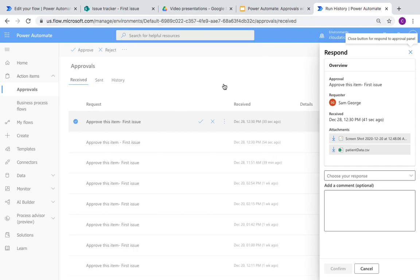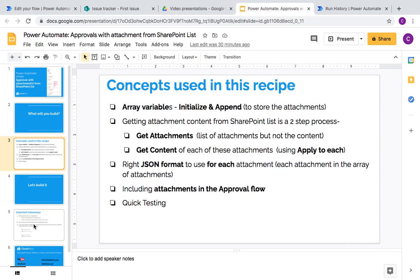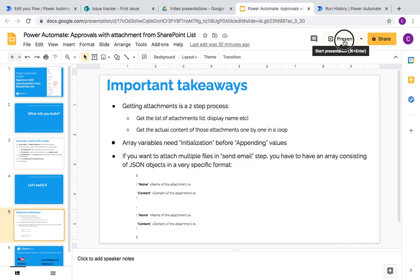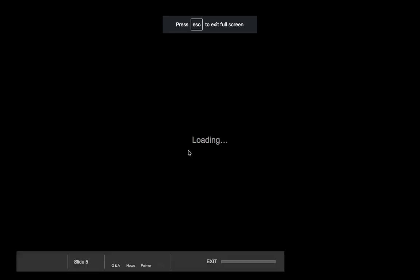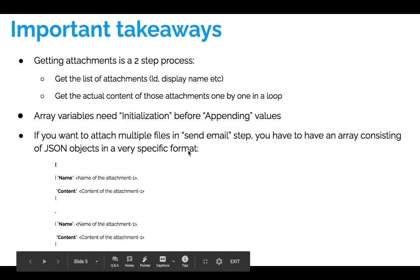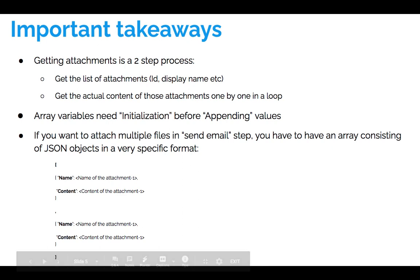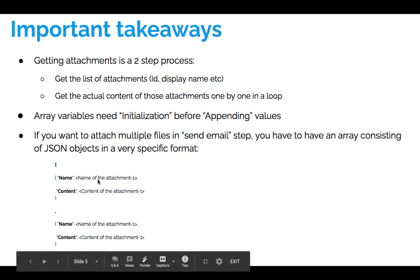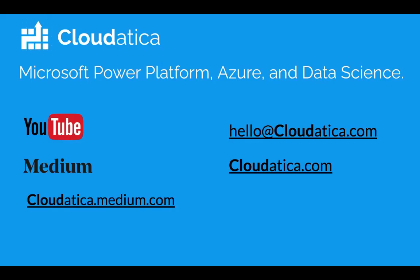Let's summarize with some quick takeaways. First, getting attachment content is a two-step process — very important. Second, your variables have to be initialized before you append values or do anything with them. Third, and very important, you need to have the right JSON structure, which I'll also put in the description of the video. Hope you liked this and found it useful. Let me know if you need any videos like this. Thank you, have a great day.